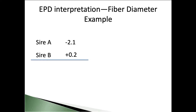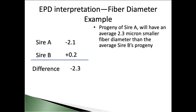In this example, what I have are two sires — we'll just call them A and B — and they're out of the Waqia evaluation. One sire for fiber diameter has a minus 2.1 EPD. The other sire you might use in your breeding program has a plus 0.2. When we interpret EPD, all we're looking at is the difference in the EPD. So in this case, the difference in those two is a minus 2.3. That tells us, if you're trying to decide which of these two to use, that progeny of sire A are going to have, on average, 2.3 micron smaller fiber diameter than the average of sire B's progeny.